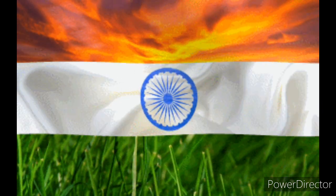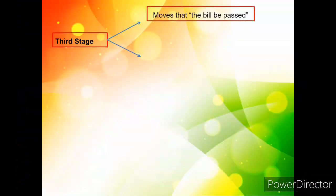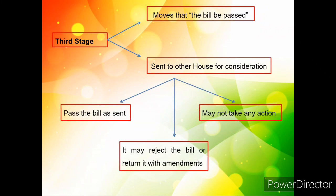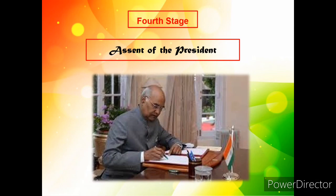In the third stage, the progress of the bill is normally quick. The member in charge moves that the bill be passed, and after brief discussions, if the bill is passed, it is transmitted to the other house for its consideration. The other house may pass the bill as it is, reject it altogether, or may not take any action — which also means rejection. The fourth and final stage is the assent of the president. After a bill is finally passed by both houses, it is presented with the signature of the Speaker to the president for his assent, and then it becomes an act.